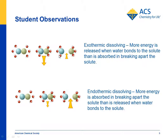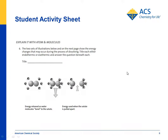In exothermic dissolving, more energy is released when the water attaches to the solute than is required to break the solute apart. In endothermic dissolving, more energy is required to break the solute apart than was given off when the water attached to the solute. On the student activity sheet, students explain the making and breaking of bonds to explain why a given dissolving would be exothermic or endothermic.